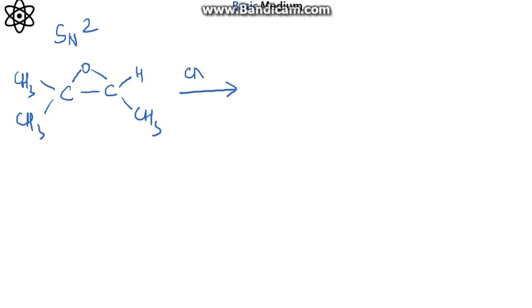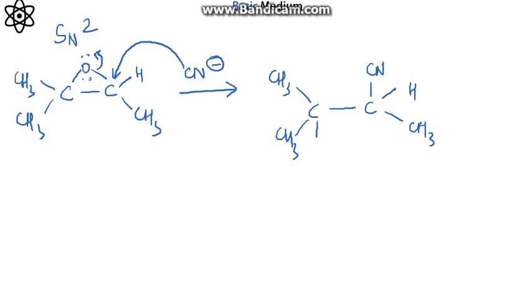So the first step is the attack of the cyanide itself. Now since this is an SN2 type of attack, the attack of cyanide will happen from the less hindered side. Which means that this is how the bond breaking takes place. So this is the first product that we are going to get.